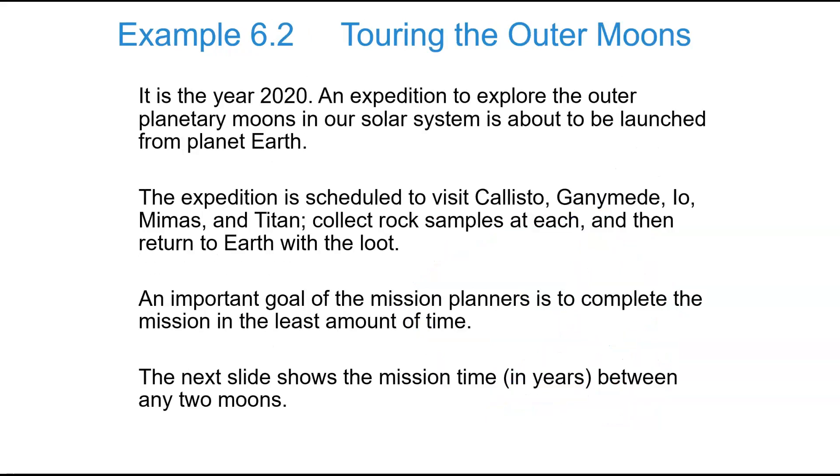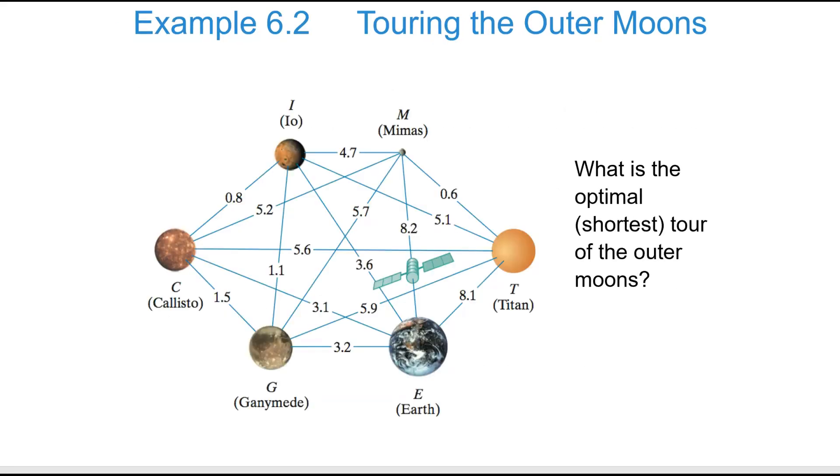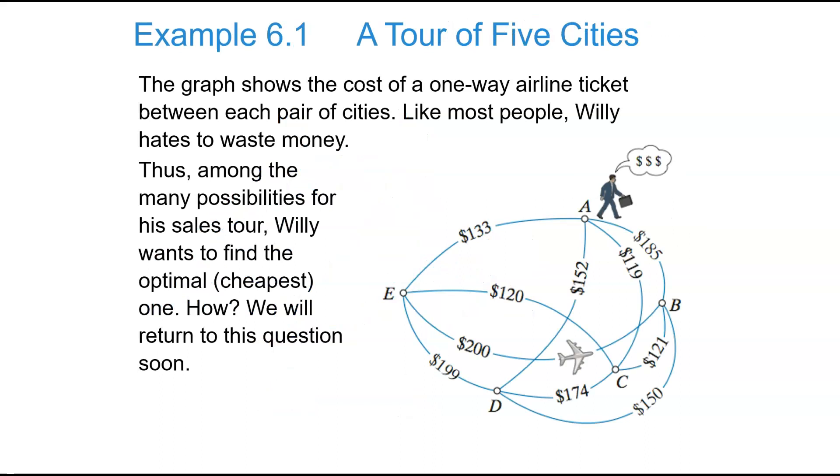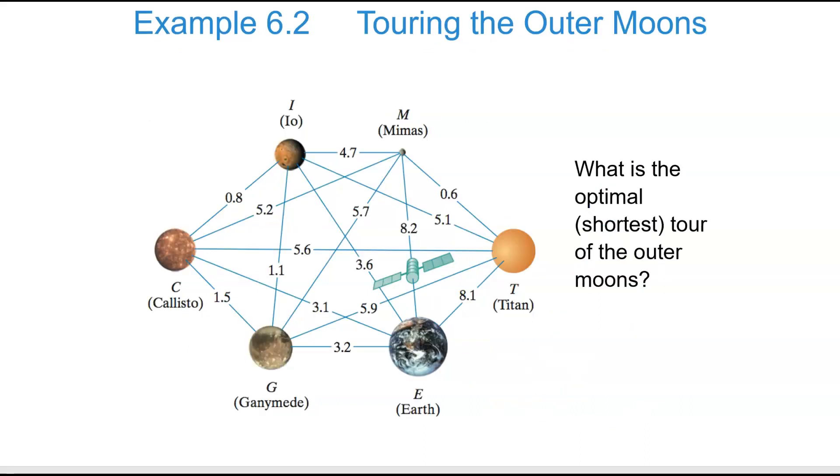Touring the outer moons. It's the year 2020. An expedition to explore the outer planetary moons in our solar system is about to be launched. It's going to visit the following places and collect rock samples, but it needs to complete this mission in the least amount of time. So they created this mapping. And then the time is what's mapped in between the edges. So again, notice in Willie's case, the cost was money. But in this case, the cost is time. And the optimal would be the shortest route.